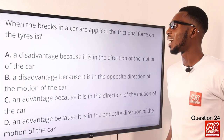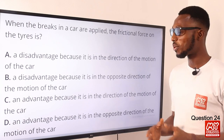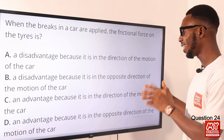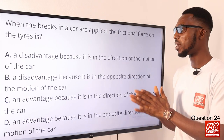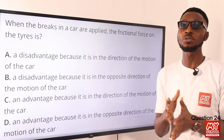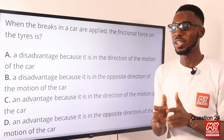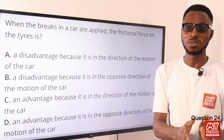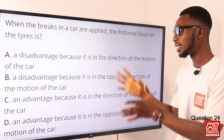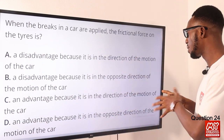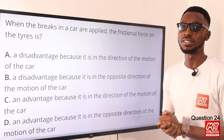Question 24: when the brakes in a car are applied, the frictional force on the tire is what? It is an advantage because it acts in the opposite direction of the motion of the car. Friction is a force of opposition — it opposes motion or any force that tends to produce motion. So option D is the right option.